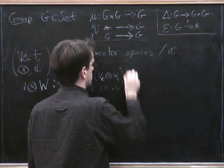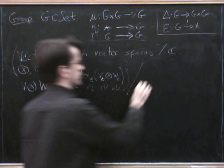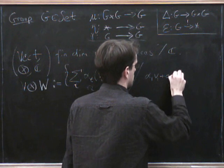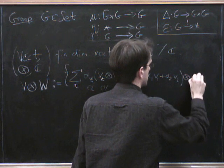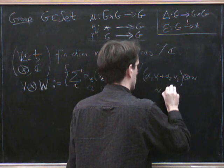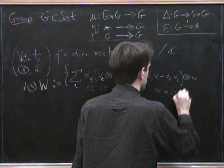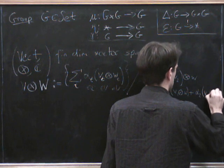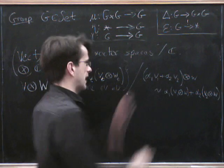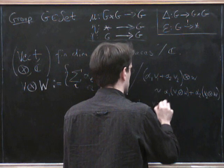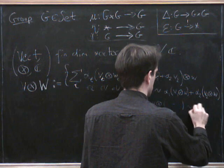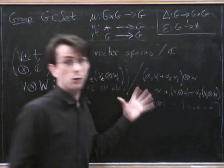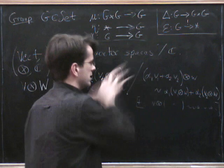And modulo certain relations. And the relations just say that if we have α₁ times v₁ plus α₂ times v₂ tensored with w, that is equivalent to α₁ v₁ tensor w plus α₂ v₂ tensor w. And the other one the other way around. So that's the symmetric one the other way around, which I won't write down. So that's the definition.